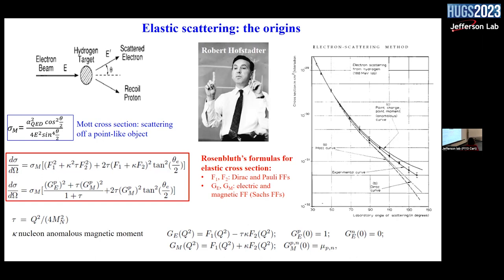The measured cross-section was deviating from all these hypotheses and was described by the Rosenbluth formula, which can be written in two ways. The cross-section becomes a function of two form factors, expressed either as F1 and F2 — the Dirac and Pauli form factors — or as GE and GM, the electric and magnetic form factors. You see the formula has a dependence on the variable tau, which is the ratio of Q² over four times the nucleon mass, and there is also the nucleon anomalous magnetic moment.